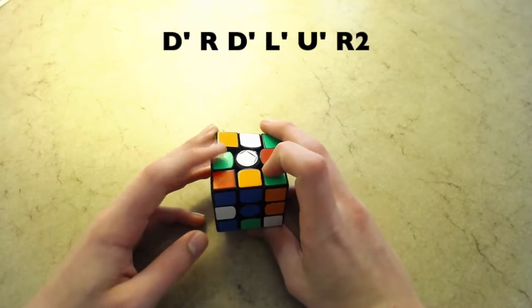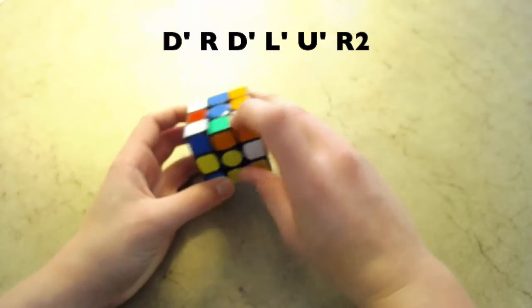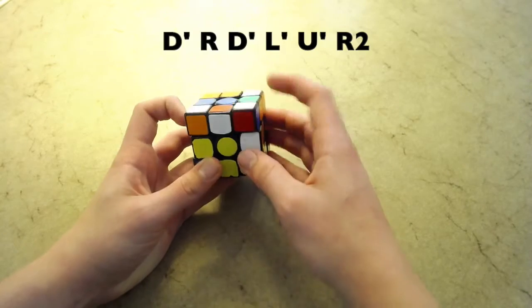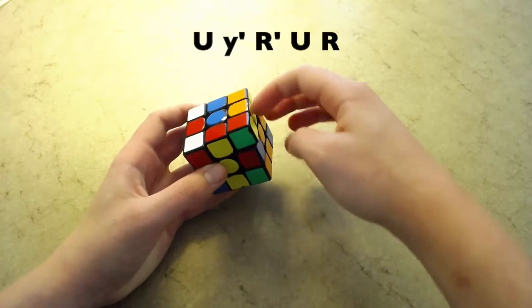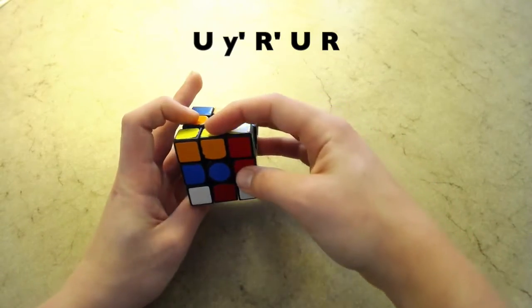Then I solved this piece back here, like that. Then I put the final cross piece in. Then I knew that this pair was here, so I rotated and then inserted it.